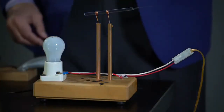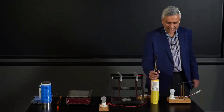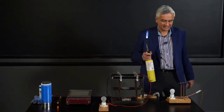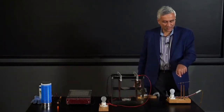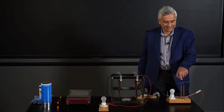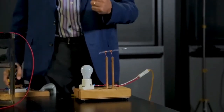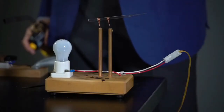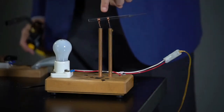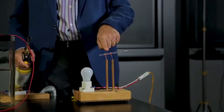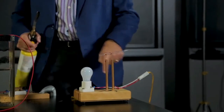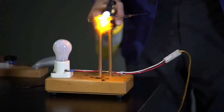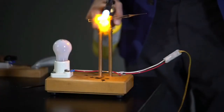Now we're going to turn that glass into a conductor by heating it up with a blowtorch. What's going to happen is the heat is going to shake a lot of electrons loose, so as I heat the glass up it's going to become a better conductor. Watch the light bulb as I heat the glass.